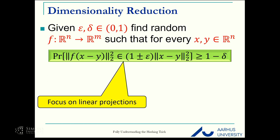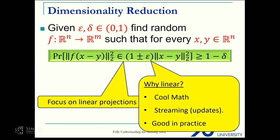For this talk, think about n as very large and m as very small. We want the probability of the distance between the images to be between (1 ± epsilon) times the original distance to be larger than 1 minus delta. For this talk, we will talk about linear projections.